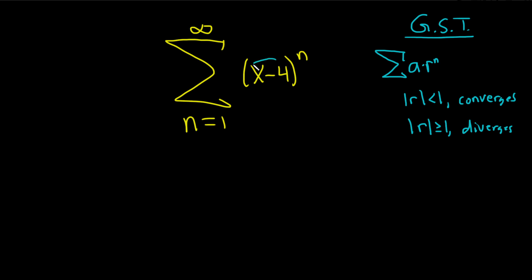So here it's really easy to see that r is whatever is being raised to the nth power. So r is equal to x minus 4.